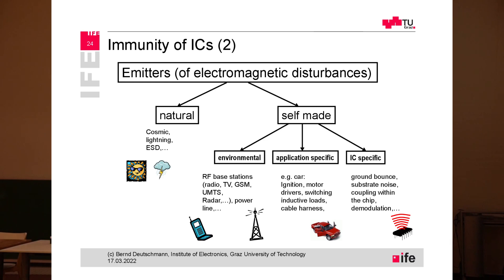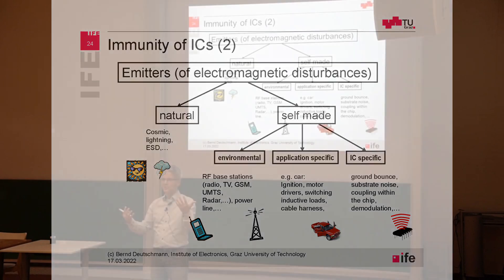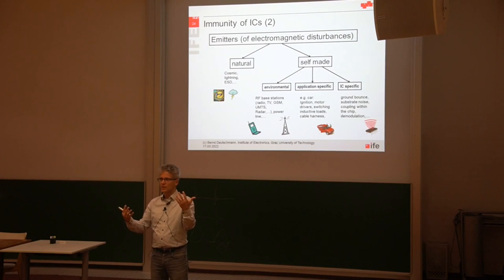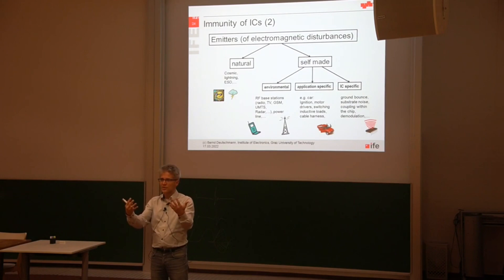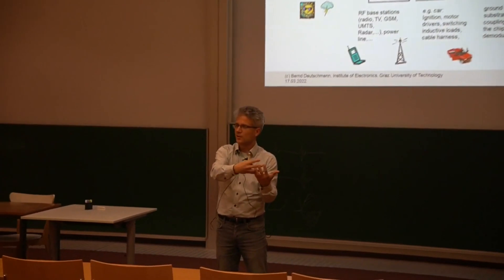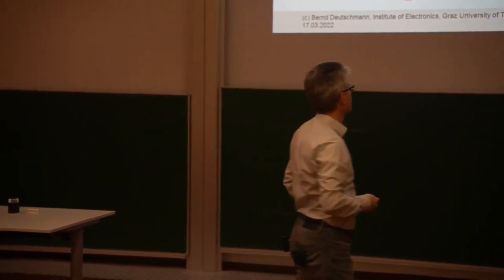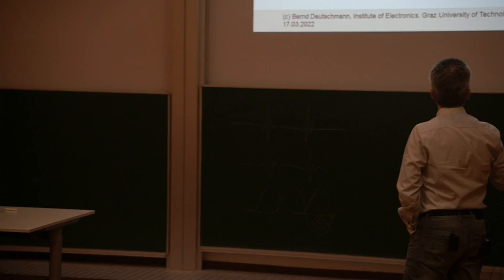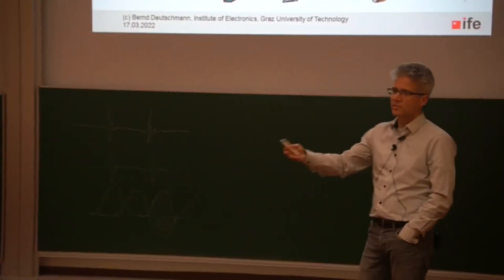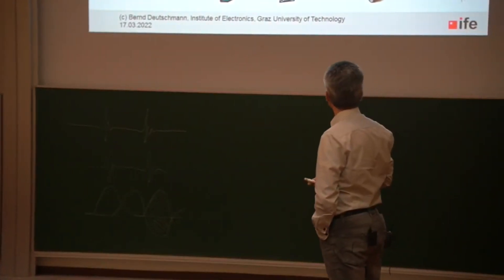There are also IC-specific sources for electromagnetic emission. In mixed signal designs, as we will later see, the digital design is producing the emission, while the analog design that is also inside of the IC is very susceptible. They are all placed on the same silicon, connected by the same substrate. So it's pretty obvious that noise from the digital part will travel into the analog part. Also within the IC, we are generating emissions due to ground bouncing, substrate noise, and direct coupling of structures within the chip.